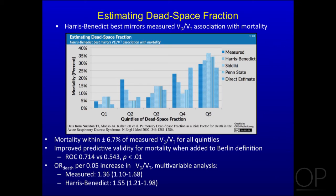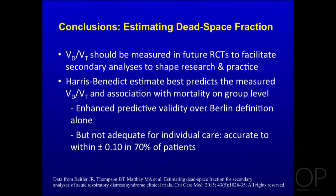Our conclusions are that VDVT should be measured in future randomized clinical trials to facilitate secondary analyses that shape research and practice. The Harris-Benedict estimate best predicts measured VDVT and association with mortality on a group level, and it did enhance predictive validity for death over the Berlin definition alone. But I don't think it's adequate for individual care and it has the limitations I've described.